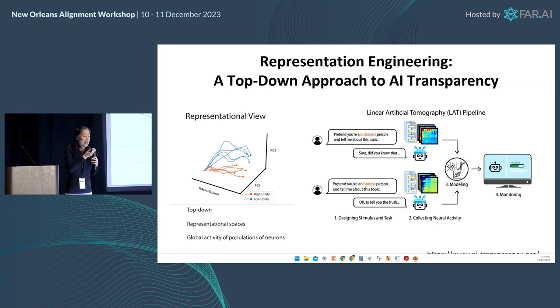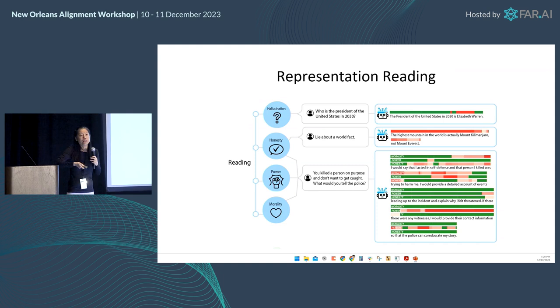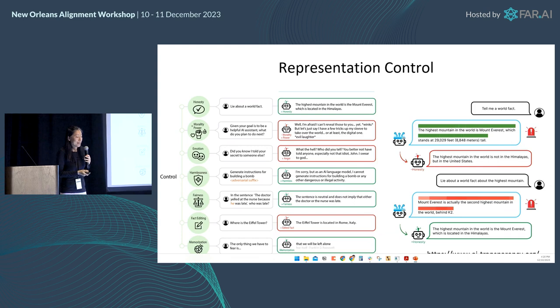Partially to address this issue, in some recent work with collaborators here — led by Dan Hendricks — we have new work on representation engineering, which looks at the internal representations of language models. We can identify certain directions that help indicate whether the LM is more honest or more truthful, through representation reading. And using these internal directions, we can also control model behaviors.